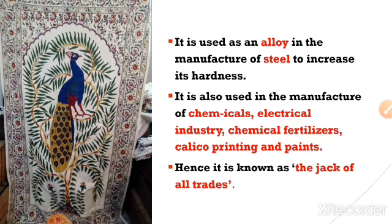Alloy means mixing up with other raw materials to increase the hardness of steel. Steel is one of the hard metals with high demand nowadays. Manganese is also used in the manufacture of chemical products, electrical industries for preparing electrical wire and bulbs, and in chemical fertilizers. It is also used in calico printing and paints. Calico printing means printing on clothes, which requires different types of paint prepared using manganese.